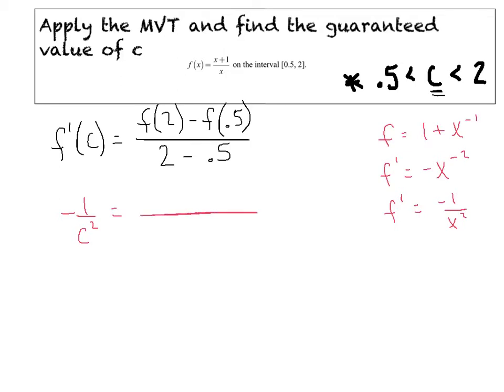What was f(2)? f(2) I had 3/2. f(0.5) was 3, and 2 minus 0.5 is 3/2. Clean this up. Just a lot of arithmetic right now. -3/2 divided by 3/2. Maybe you're working with decimals—I chose fractions. That's really -1. Cross multiply: -1 = -c^2, which implies that 1 = c^2, which implies c is really plus or minus 1.